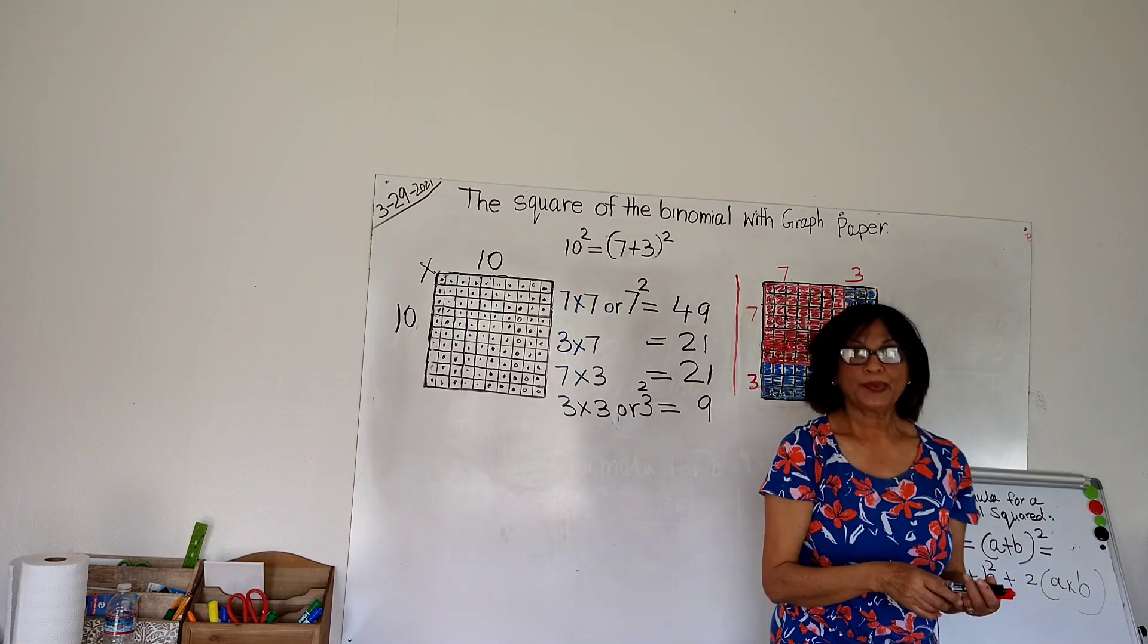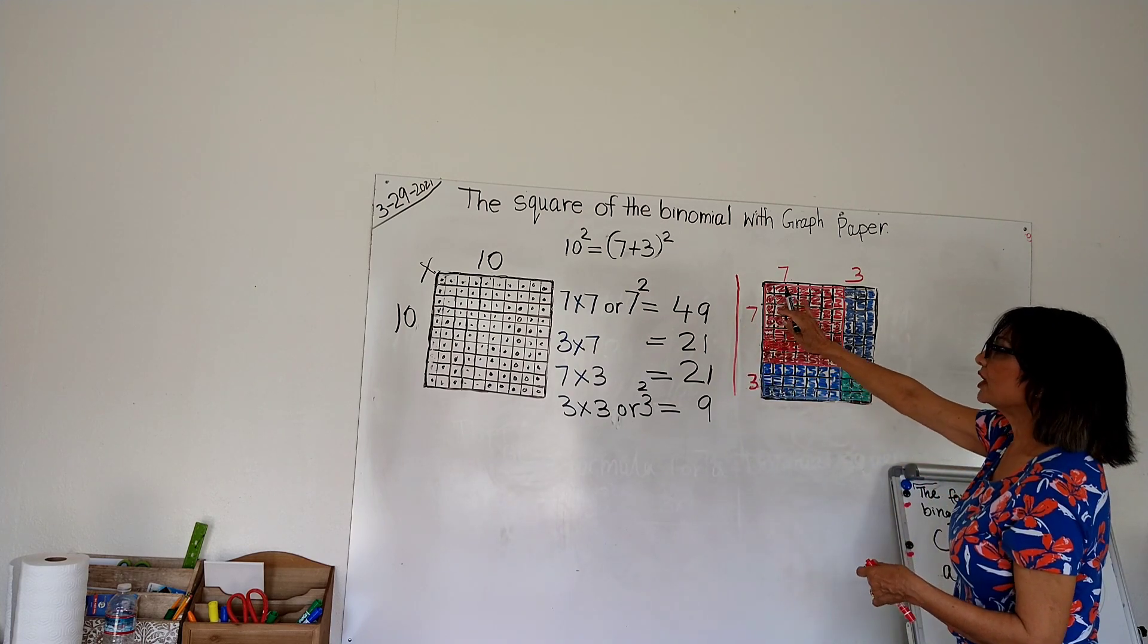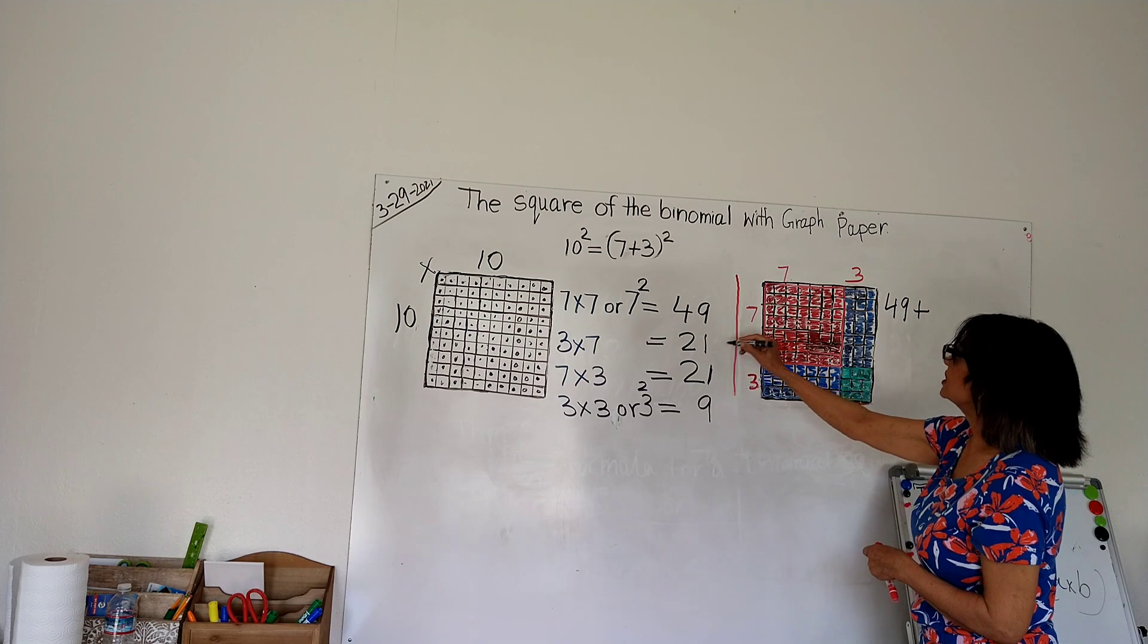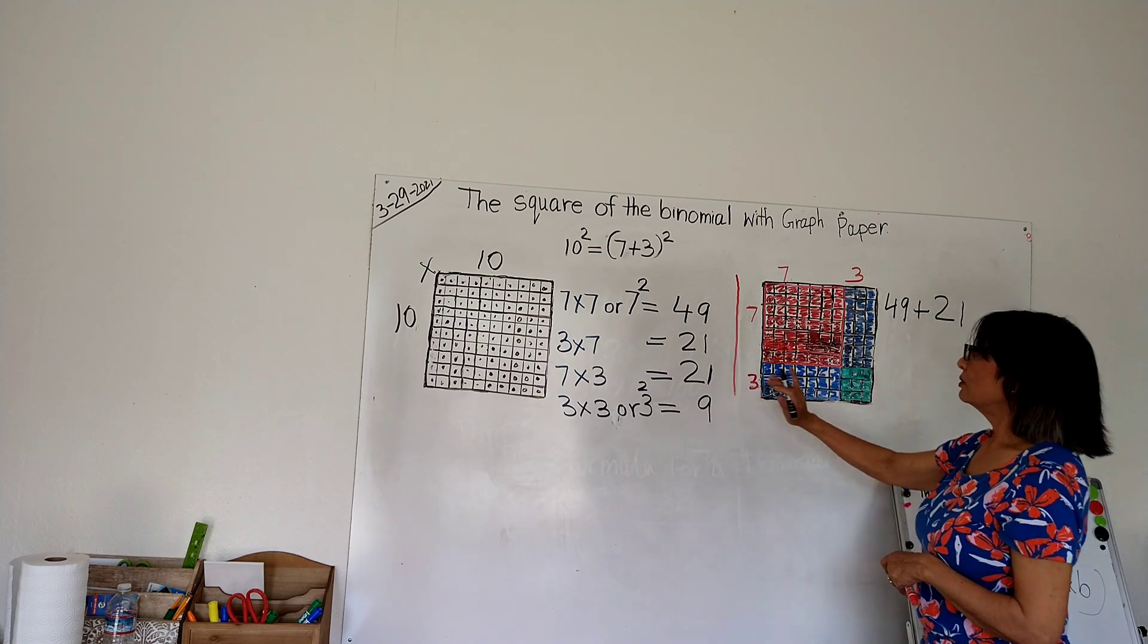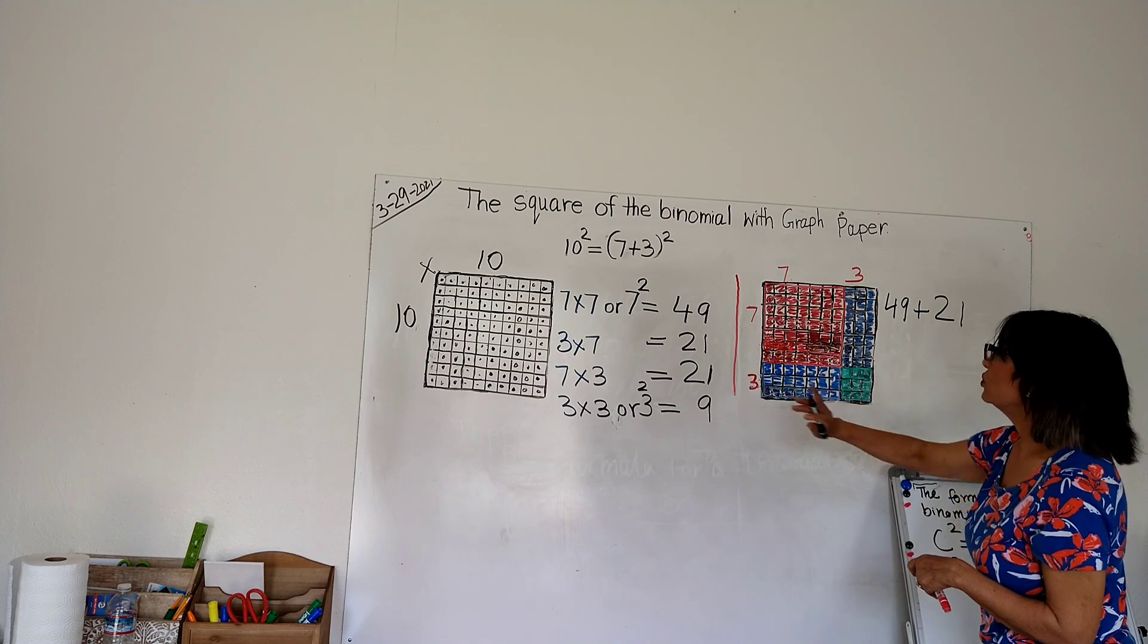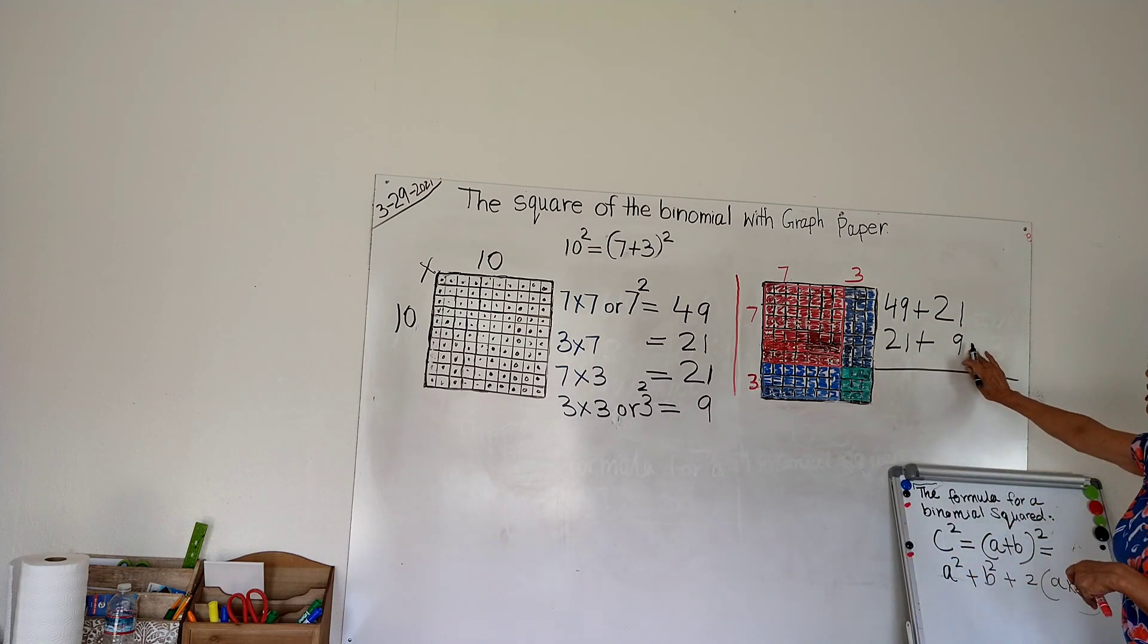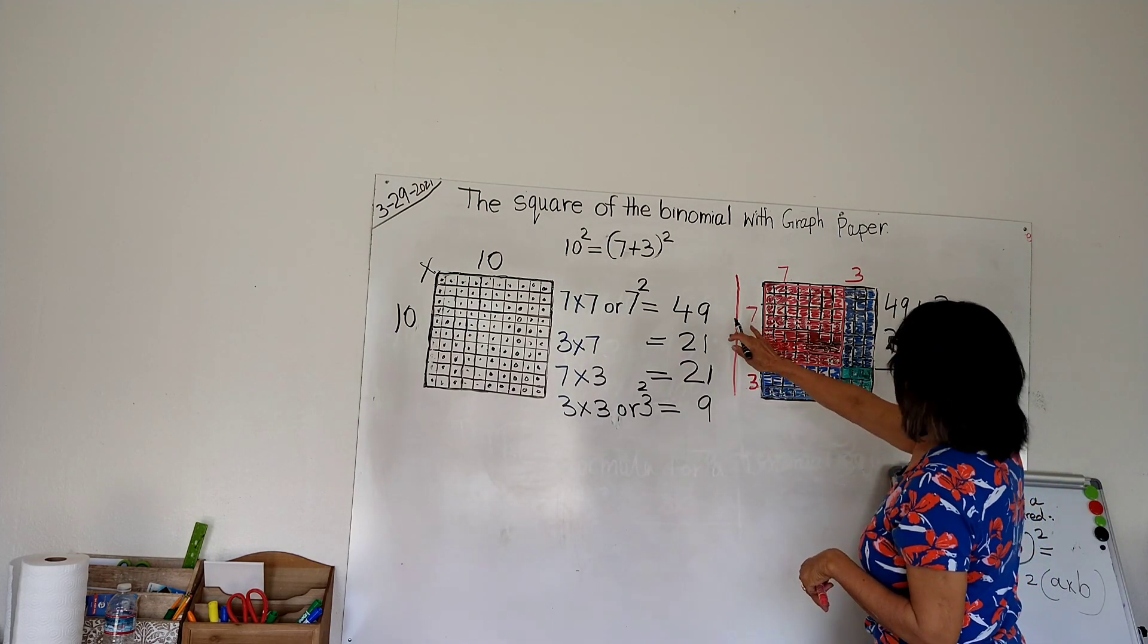So we have here 49, we know where this comes from: 7 times 7 is 49, or square of 7. Plus we have 21, we know where this comes from, and then we have one more rectangle, so we have 21 here. Plus 9, we know where this comes from, the square of 3.